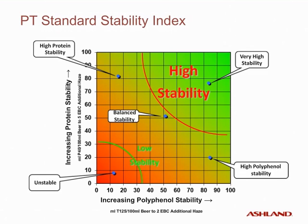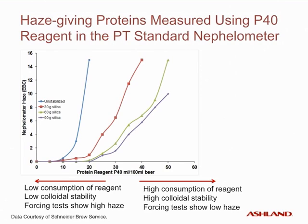This is the PT standard stability index grid. The aim is to have balanced stability in each beer, with proteins and polyphenols selectively removed in a balanced fashion. High stability for both parameters isn't always necessary — stability is dependent on factors such as seasonal temperature and whether the beer is packaged in bottles or kegs. This graph shows example measurements of haze-giving proteins using the P40 reagent in the PT standard nephilometer. Low consumption of reagent indicates high protein values and low colloidal stability; high consumption of reagent indicates low protein values and high colloidal stability.